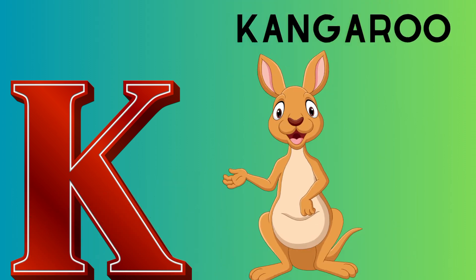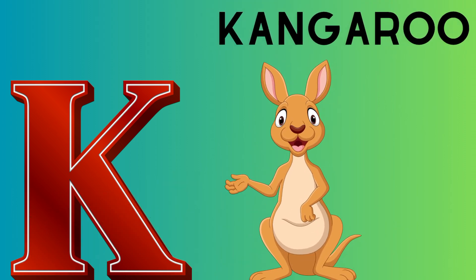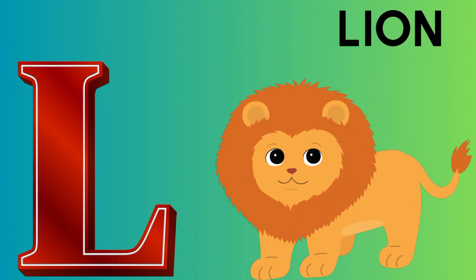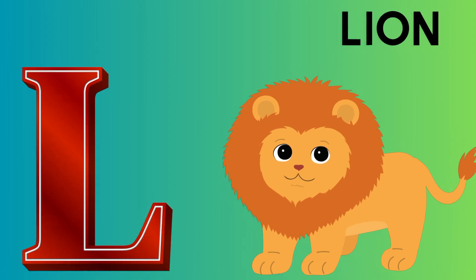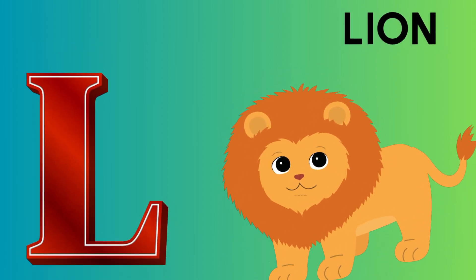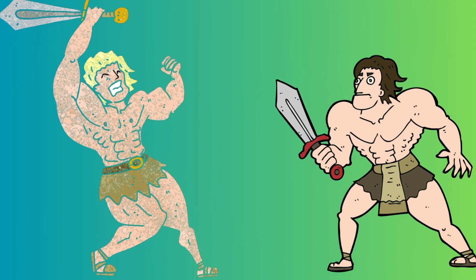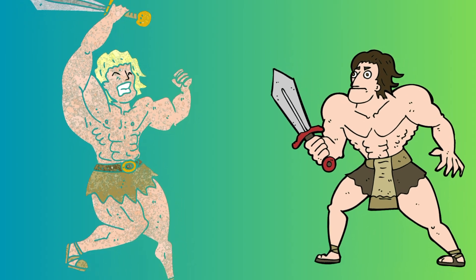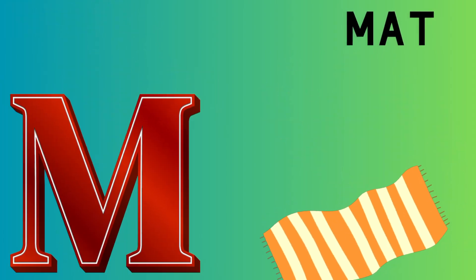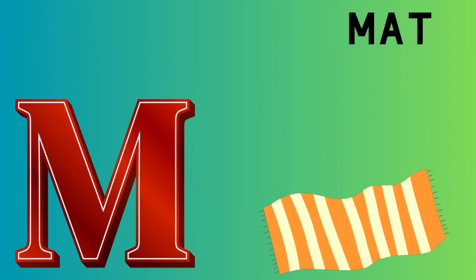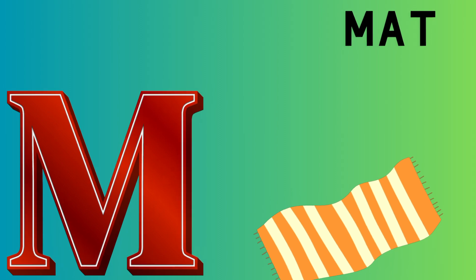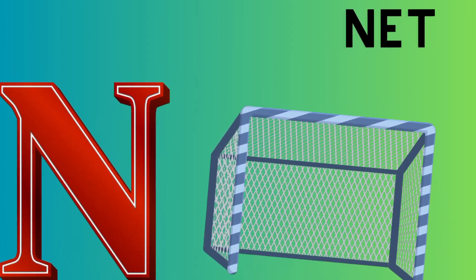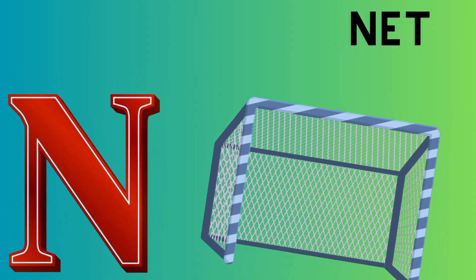K is for kangaroo, k-k-kangaroo. L is for lion, l-l-lion. M is for mat, m-m-mat. N is for net, n-n-net.